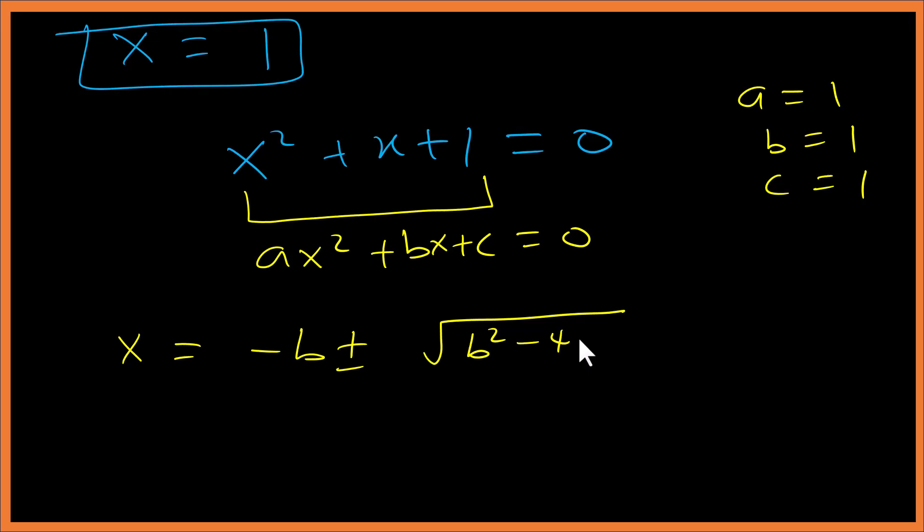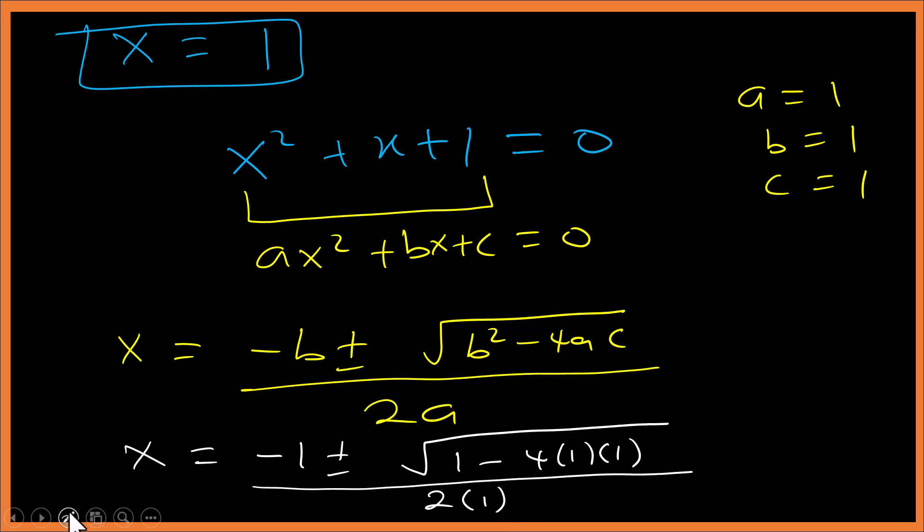So which will give us x = (-b ± √(b² - 4ac)) / 2a. Let's do the substitution. We have x equals -1 ± √(1² - 4×1×1) all over 2. So we have x = (-1 ± √(1 - 4)) / 2. So we have x = (-1 ± √(-3)) / 2.